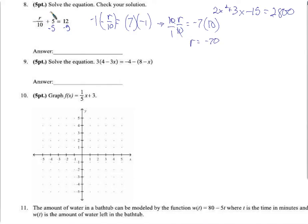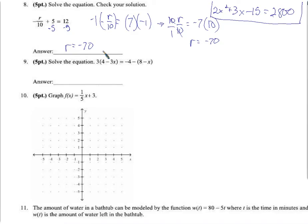You might have been able to reason: I need to add 5 to something to get 12, so that something is 7 — and since it's negative r over 10, r has to be negative 70. But this guessing approach doesn't last long in algebra 2. Even adding fractions to a simple-looking equation makes it too hard to think out. So start now: subtract 5 from both sides, add 2 to both sides — whatever it takes, one slow step at a time.